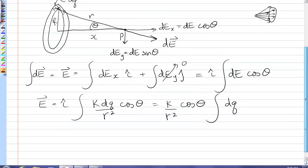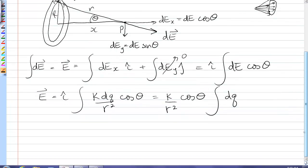Well, the integral of dq is just the sum of all the elements of charge around the ring, which is just the total charge Q. Oops, I lost my i hat.